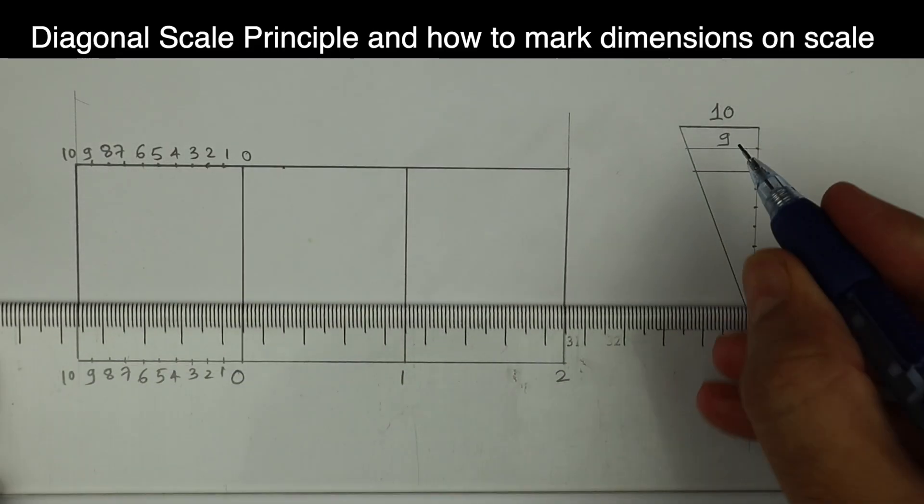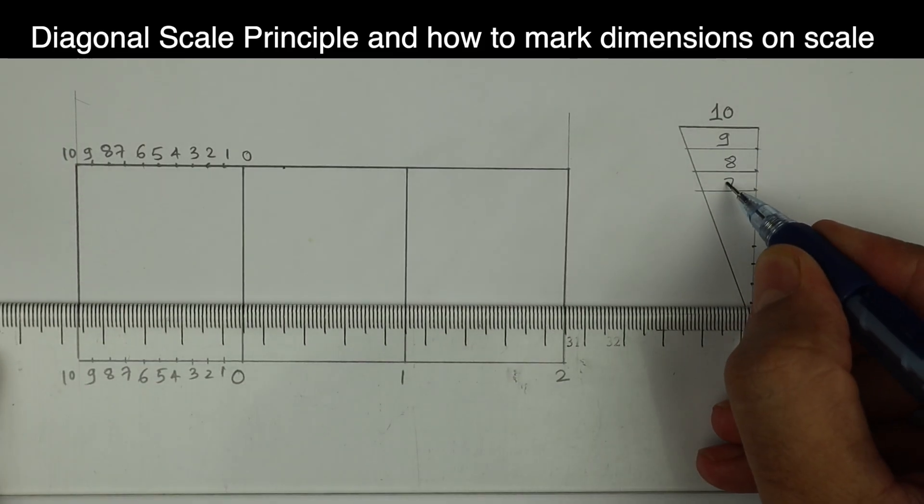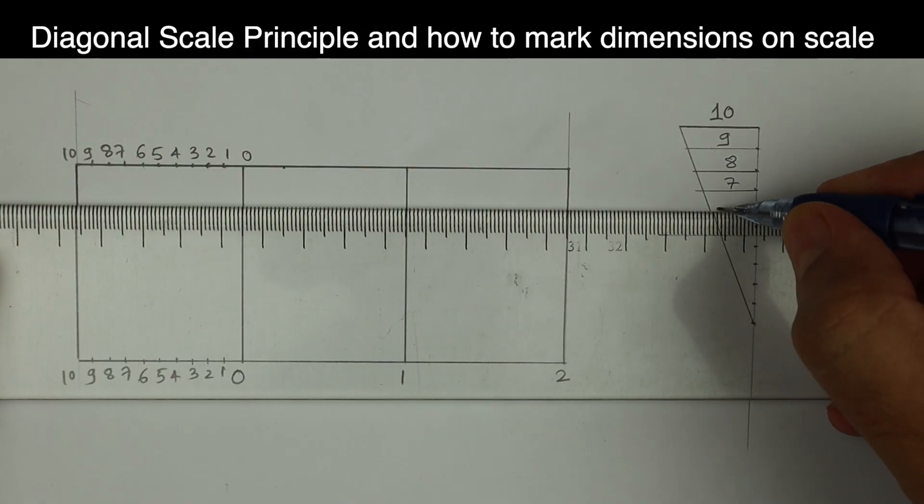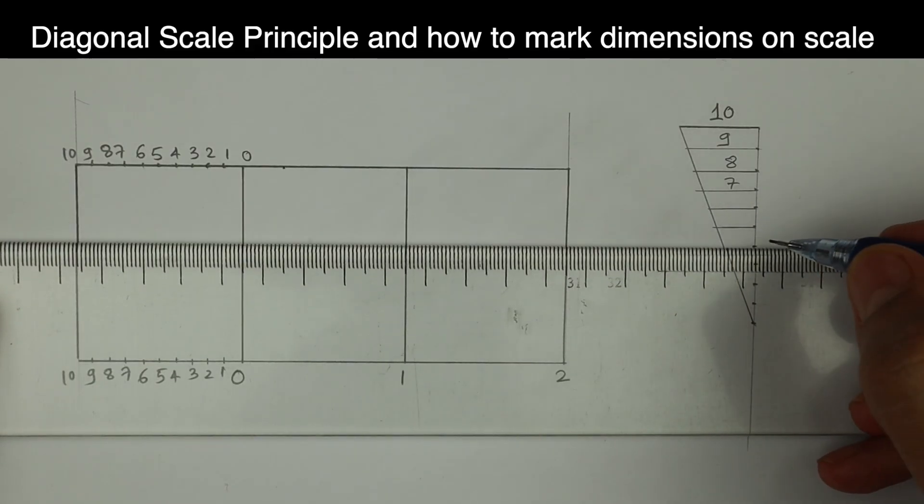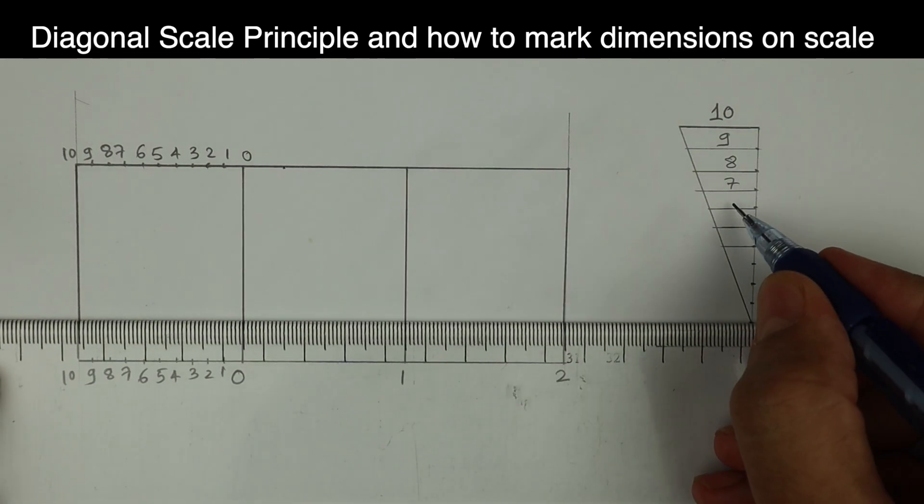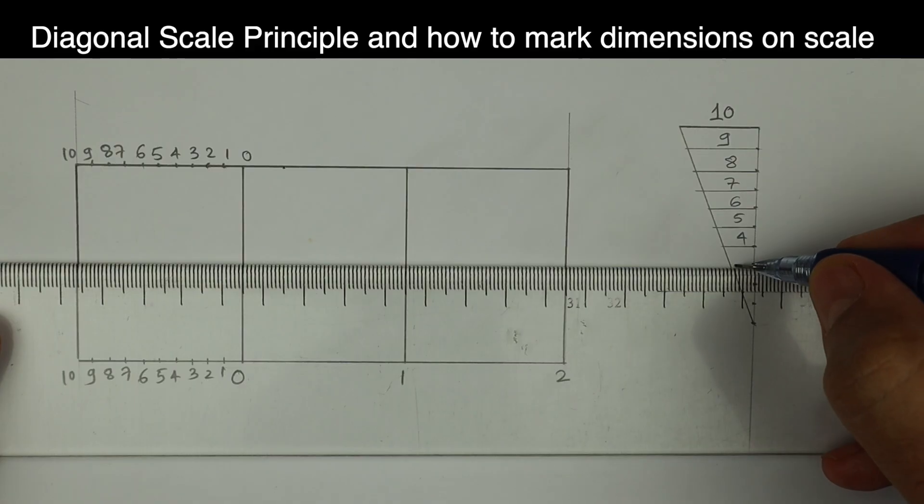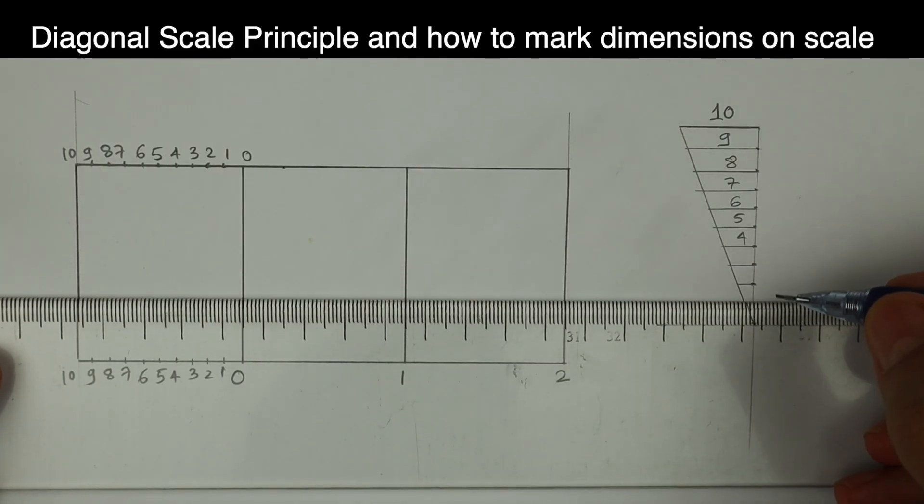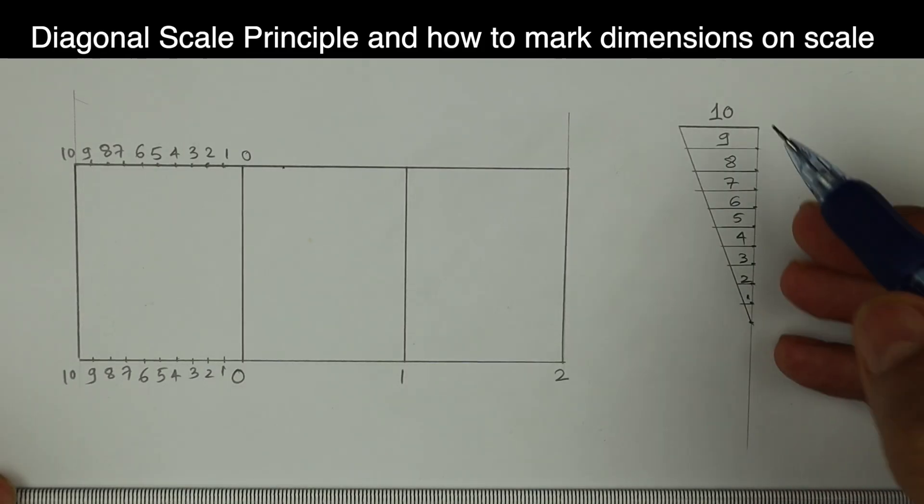Then again, if I draw a line, it will become 8mm, then again it will become 7mm. Then again you draw, it will become 6, 5, 4, 3, 2, 1. So if you see, I have divided this line into equal parts.